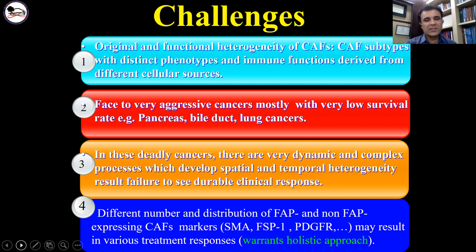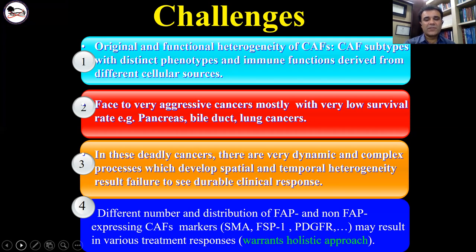Let me summarize our challenges. We have two main issues: the original and functional heterogeneity of CAFs, with subtypes of distinct phenotypes and immune functions derived from different cellular sources. We are facing very aggressive cancers with very low survival rates, like pancreas, cholangiocarcinoma, and lung cancers. In these deadly cancers, there are very dynamic and complex processes which develop spatial and temporal heterogeneity, leading to failure to see durable clinical response. Different numbers and distribution of FAPI and non-FAPI expression CAF markers may result in various treatment responses, requiring a holistic approach.